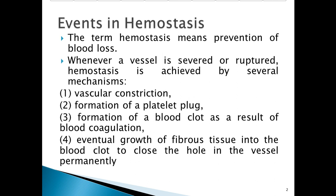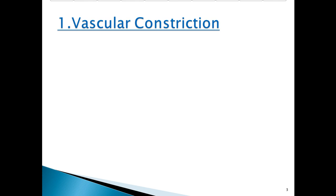The mechanisms are: number one, vascular constriction; number two, formation of platelet plug; number three, formation of a blood clot as a result of blood coagulation; and lastly, growth of fibrous tissue into the blood clot to close the hole in the vessel permanently. These are the four steps of hemostasis.